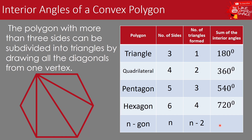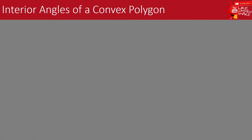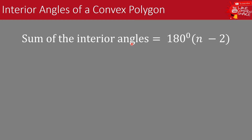To get the sum of the interior angles of an n-gon, we multiply the number of triangles formed by 180 degrees. So the formula for the sum of the interior angles of a convex polygon is: 180 degrees times the quantity of n minus 2. This is our formula to find the sum of the interior angles of any convex polygon.